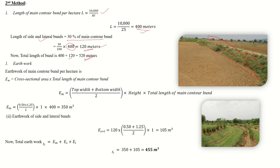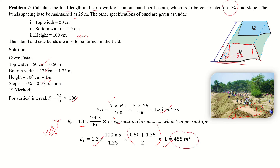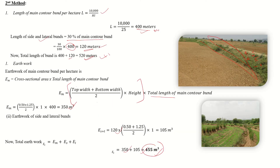Total bund length: main bund plus lateral and side bund equals 520 meters. Earthwork is calculated using (top width plus bottom width) divided by 2, multiplied by height, multiplied by the total length. Main bund length is 400 meters and side/lateral bund is 120 meters. Adding the earthwork for both gives the total earthwork of the bund, which comes out to 455 cubic meters.